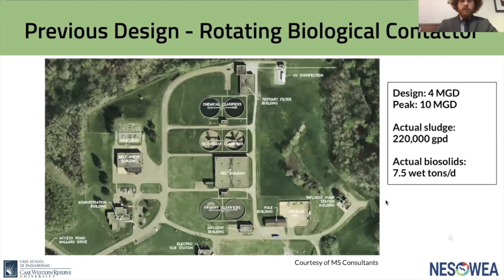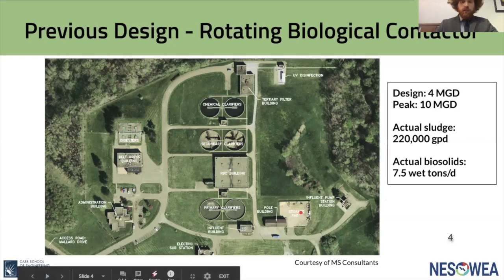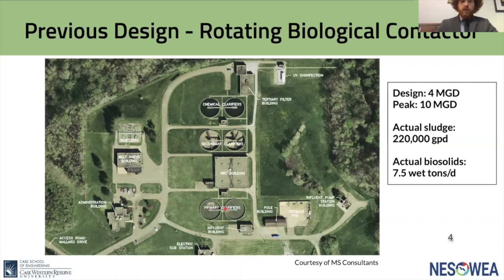The current design of the plant, as of the summer, is the rotating biological contact plant. In this building diagram, there is an influent station which goes through primary clarifiers, which drain to the digester building. The liquid flow then goes to the RBC building, which goes to chemical clarifiers, and the sludge from those clarifiers goes to the digesters. There are two solid streams of sludge going to the digesters. The current design is for 4 million gallons per day with a peak hydraulic capacity of 10 million gallons per day.